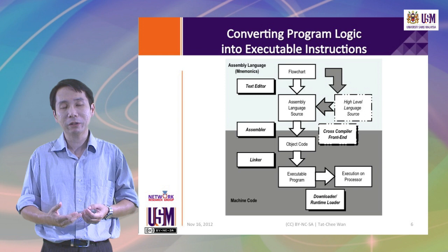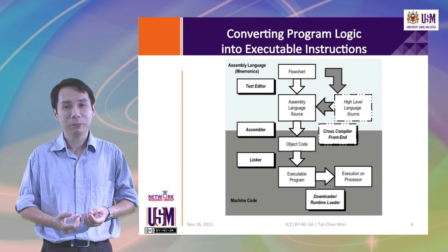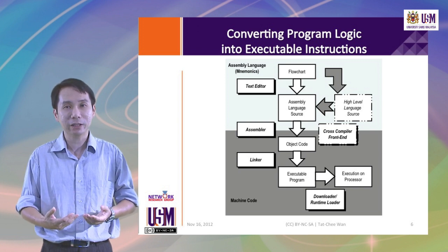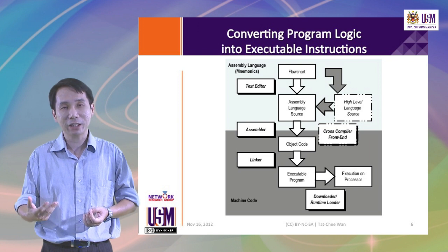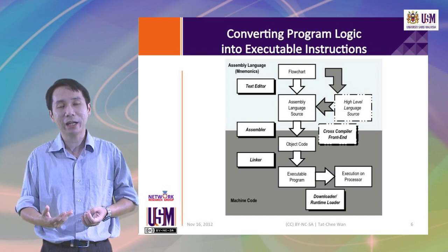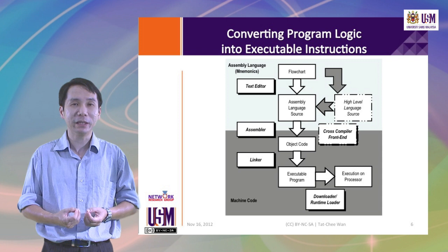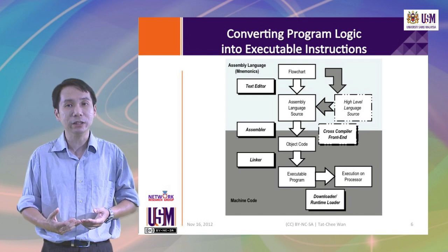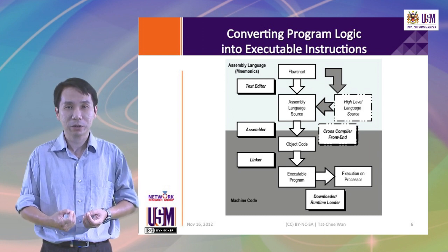The second step — once we have assembly language instructions — we use an assembler to convert them into object code. Because we are operating on the ARM microprocessor and our personal computers often run Intel-based or other processors, we need a cross-compiler which converts assembly language statements for the ARM processor on a host platform. This cross-compiler front-end generates ARM object code for the microcontroller. Finally, the object code is linked into an executable program by the linker, and this executable must then be downloaded into the Next using a downloader or runtime loader program so it can be executed on the processor.